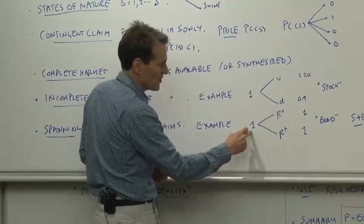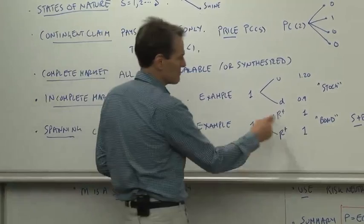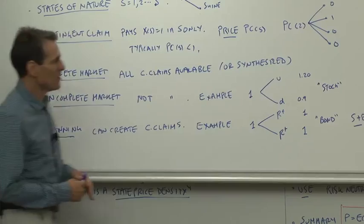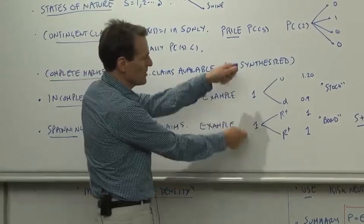To continue our example, a bond would be you put in $1, and you get RF in each state. And a good numerical example is just if the interest rate is zero, you put in $1, you get out $1 in each state.